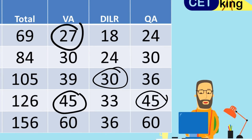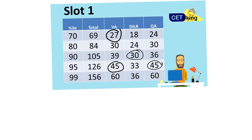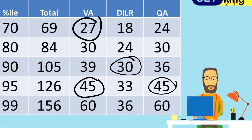So to summarize: percentile based on attempts was the first method; percentile based on score is the second method. In this score-based calculation I've made two assumptions: number one, I'm assuming some accuracy based on mock scores; number two, I'm comparing against the raw scaled scores of last year.